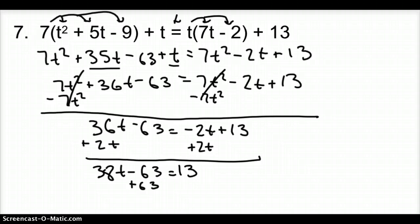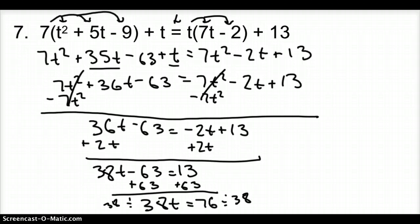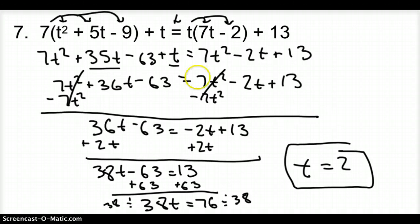Add 63 to both sides to get 38t equals 76. Then divide both sides by 38 — we have to undo multiplication — giving t equals 2 for your final answer. To check, plug 2 in for every t in the original problem; both sides must come out with the same number if t equals 2 solves the equation.